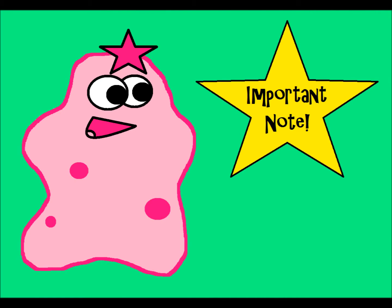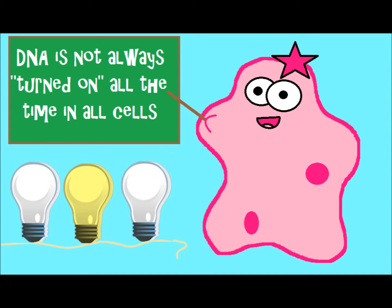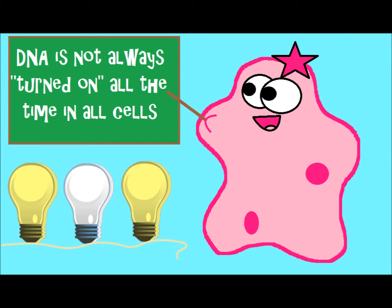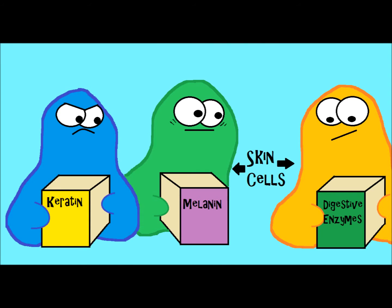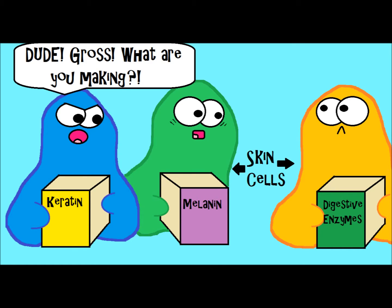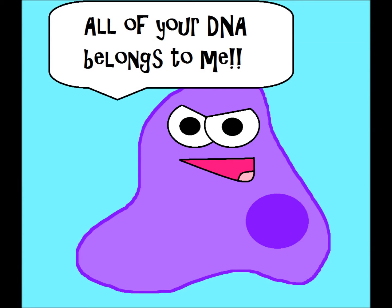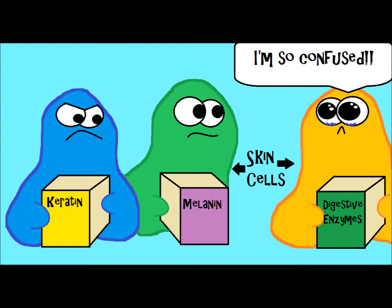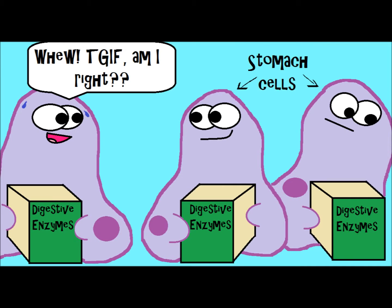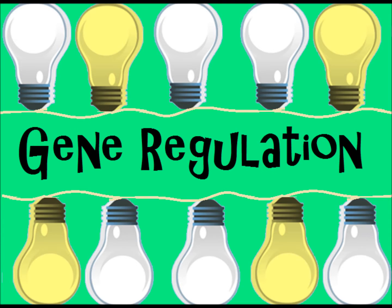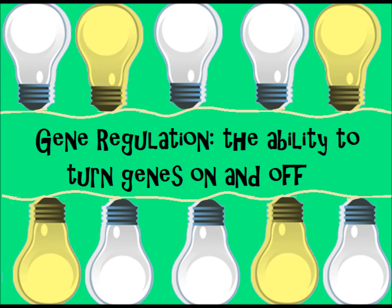Even though every cell contains your entire DNA code, that DNA is not turned on all the time in all of your cells. For example, a skin cell is not producing digestive enzymes — even though that's coded for in the DNA. In a stomach cell, that would be turned on and activated. We call this gene regulation: the ability to turn genes on and off.